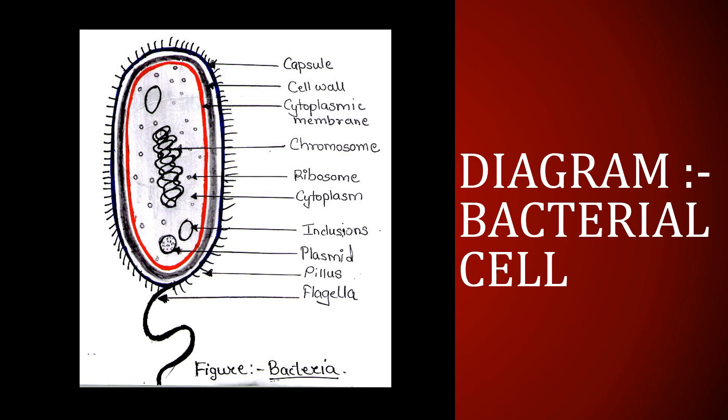These are the external structures of a bacteria. Beyond the capsule, there is a cell wall. In case of non-capsulated bacteria, the cell wall is the outermost covering and acts as a protective covering. Beyond the cell wall, there is the cytoplasmic membrane, or cell membrane, and this cell membrane holds the cytoplasm. Beyond the cell membrane, there is the cytoplasm, and all the internal structures are immersed in this cytoplasm.